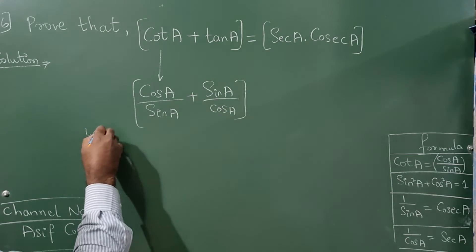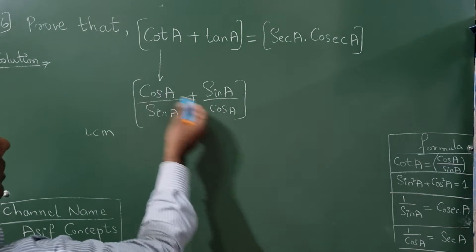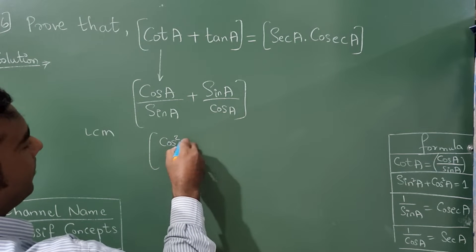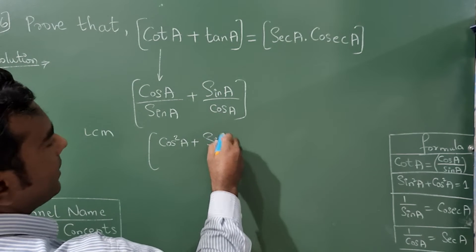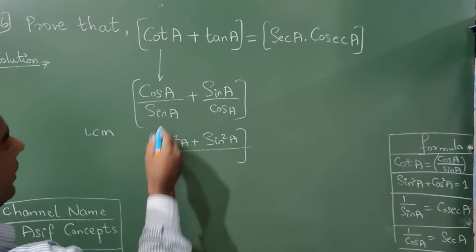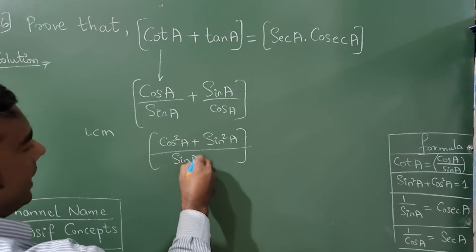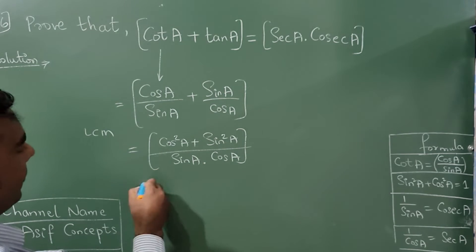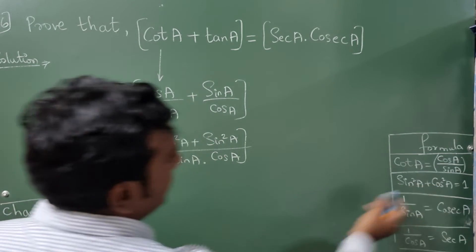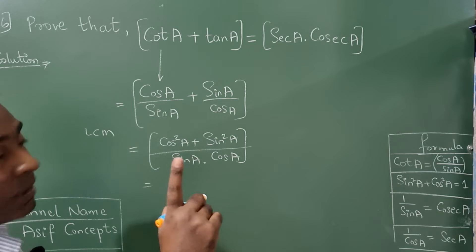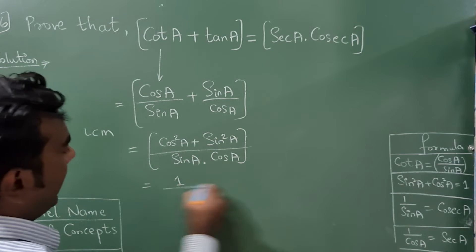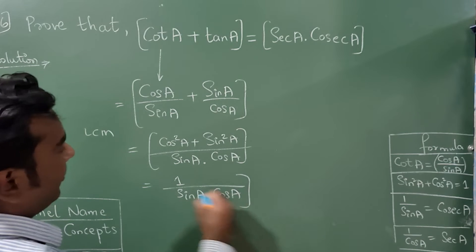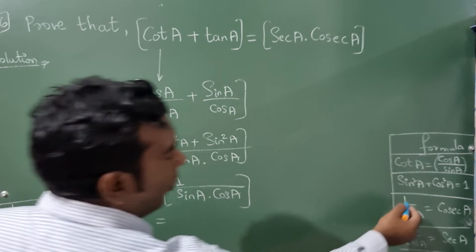Take the LCM — cross multiply to get cos squared A plus sin squared A, divided by sin A into cos A. From the Pythagorean identity, sin squared A plus cos squared A equals one, so we write one divided by sin A into cos A.